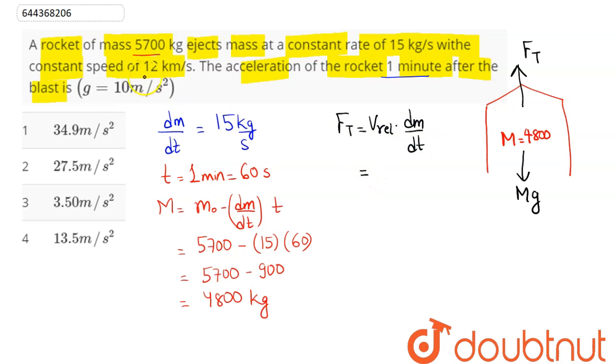V relative here is given as 12 km per second converting into meter per second. This comes as 12 into 10 power 3 into dm by dt value is 15. So this on multiplication comes as 12 into 15 is 180 into 10 raised to power 3.